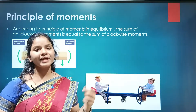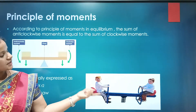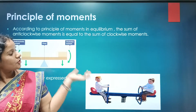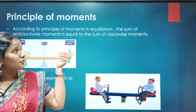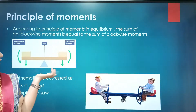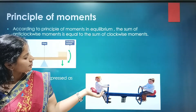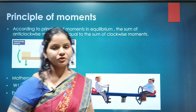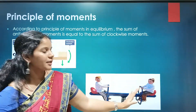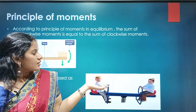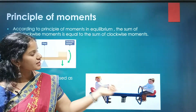Now, principle of moments. Based on the equilibrium concept, we explain the principle of moments. Consider the case of a seesaw — two kids are sitting and balancing each other. The principle of moments states that in equilibrium, the sum of clockwise moments equals the sum of anti-clockwise moments. Mathematically: w1 × r1 = w2 × r2, where w1 and w2 are the weights and r1 and r2 are the distances from the fulcrum.